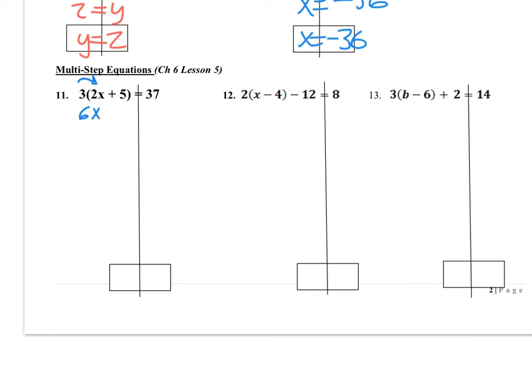And I get 6x, 3 times 2x, and then I do it to my last one, 3 times 5 plus 15 is all equal to 37. Now I would need to subtract both sides by 15.